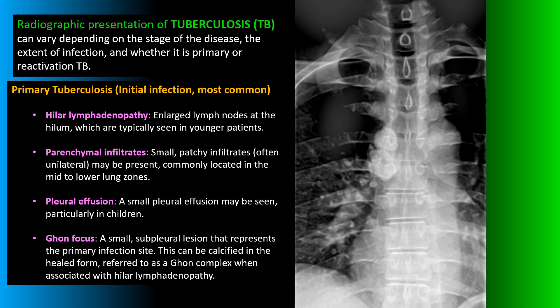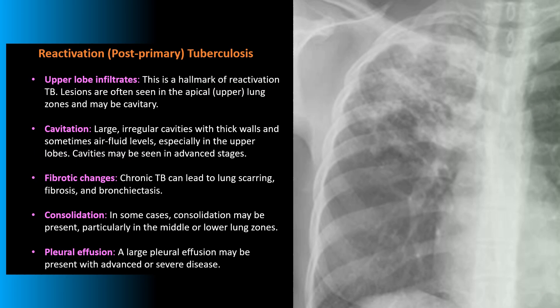With primary tuberculosis we're looking for things like hilar lymphadenopathy, parenchymal infiltrates, pleural effusion, and the characteristic Ghon focus. Reactivation or post-primary tuberculosis is known for upper lobe infiltrates, large cavitary lesions, fibrotic changes, consolidation, and pleural effusions.